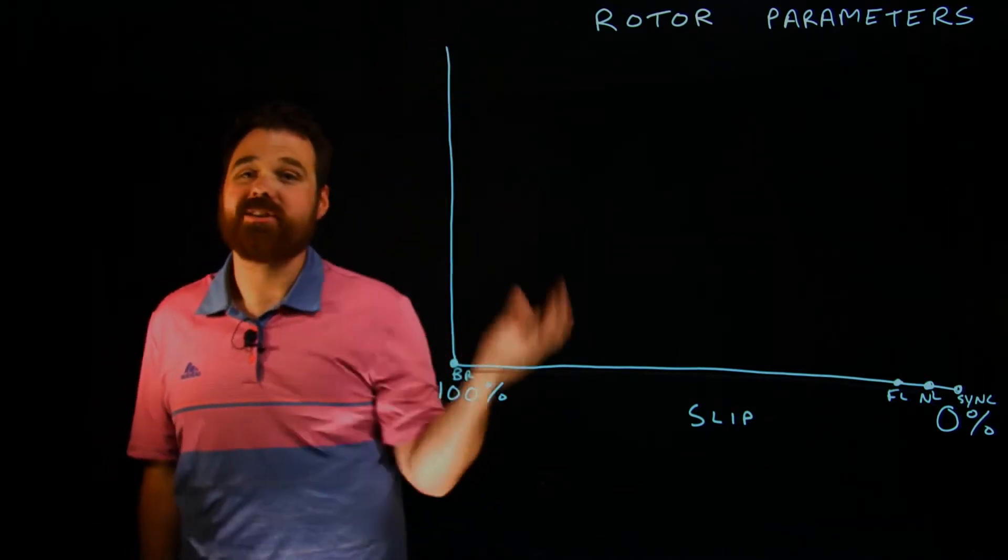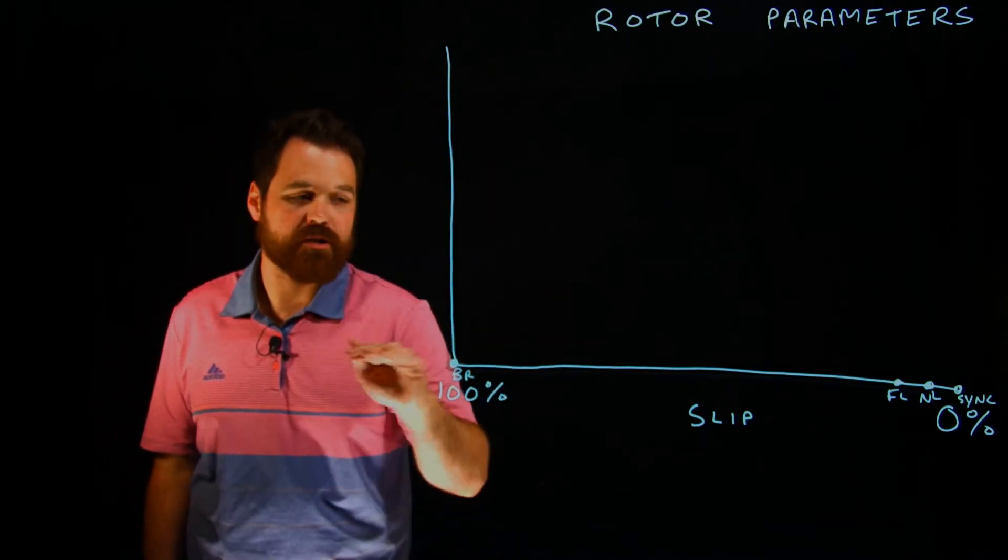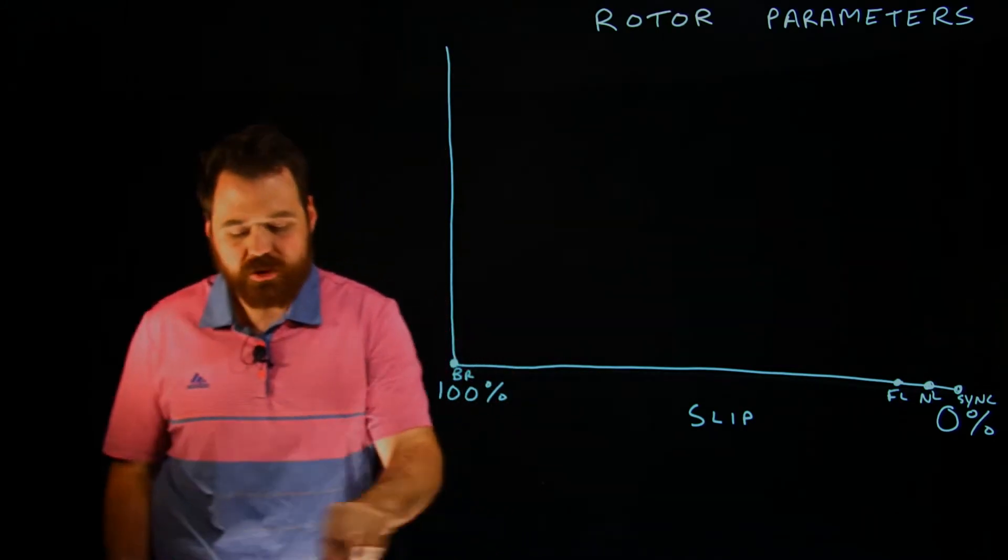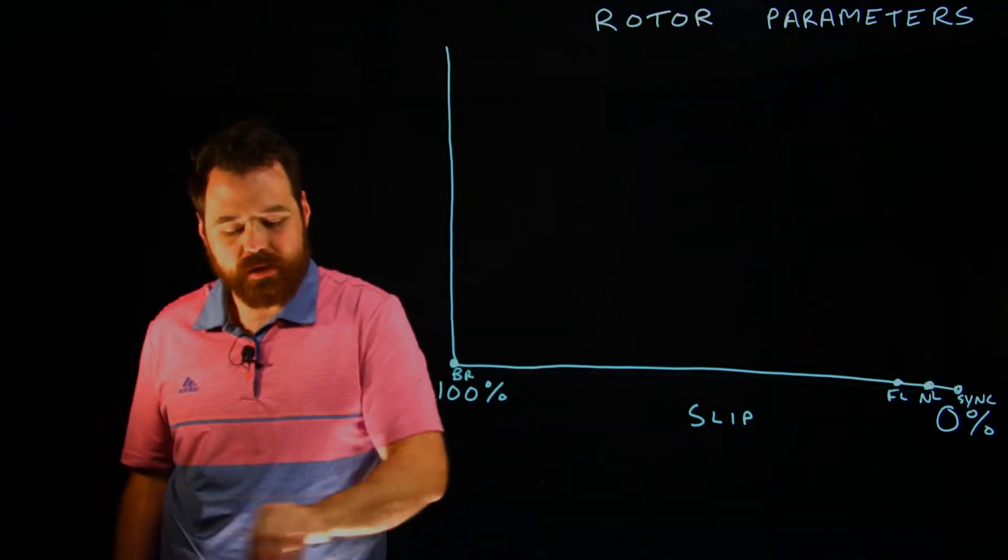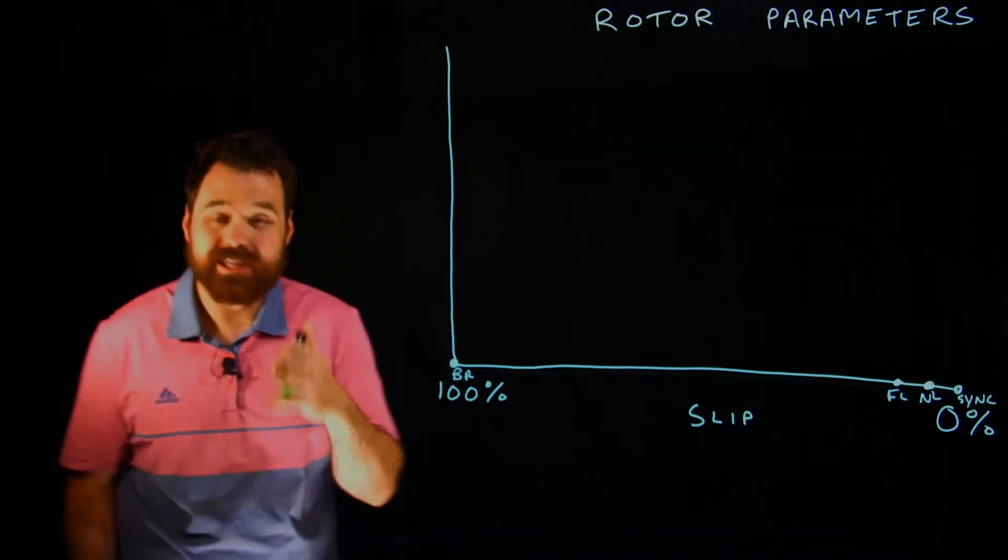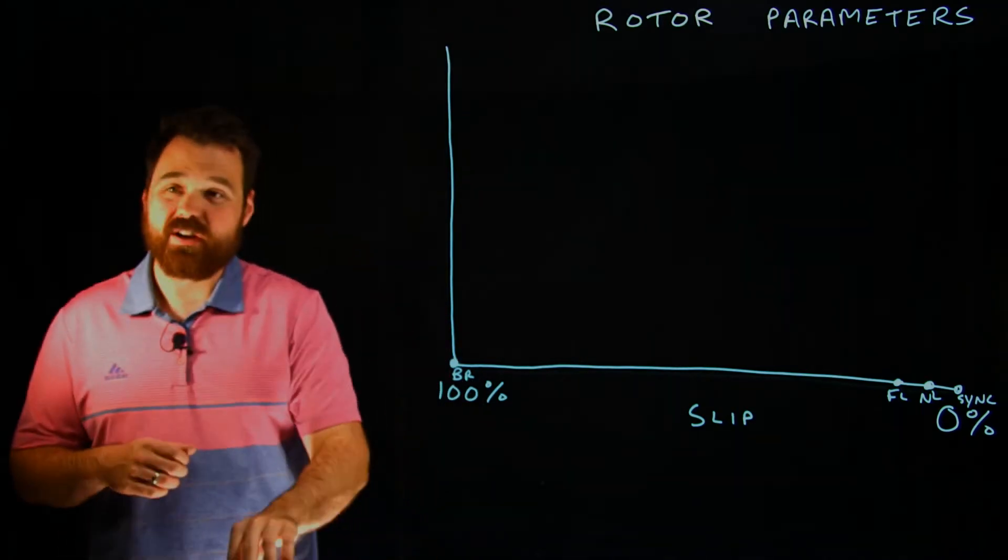This side right here is going to just be our rotor values, our minimum and then a maximum. So when we're talking about the rotor, something really important to keep in mind is that our resistance of the rotor, the actual resistive value physical property is going to be constant throughout.